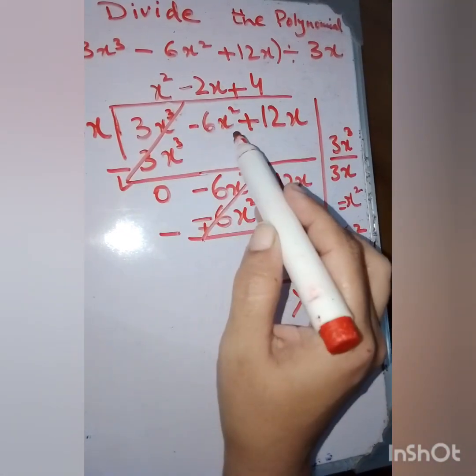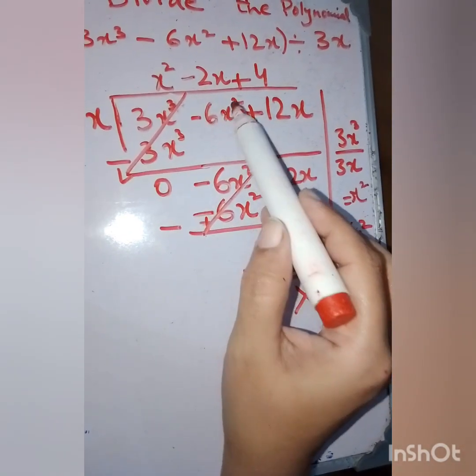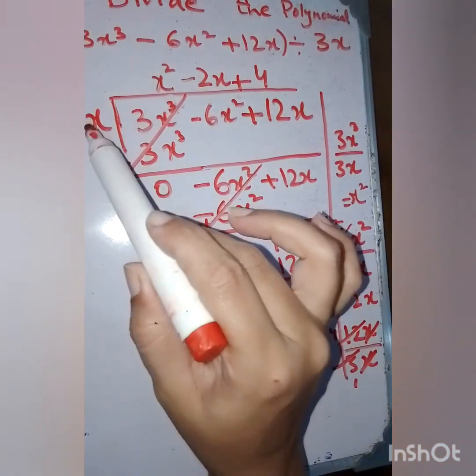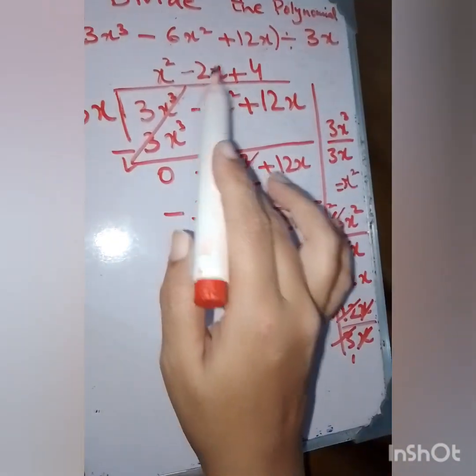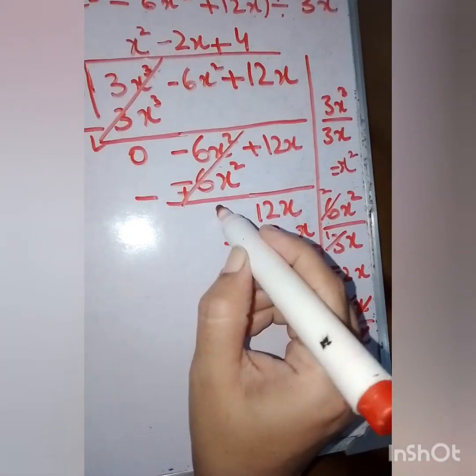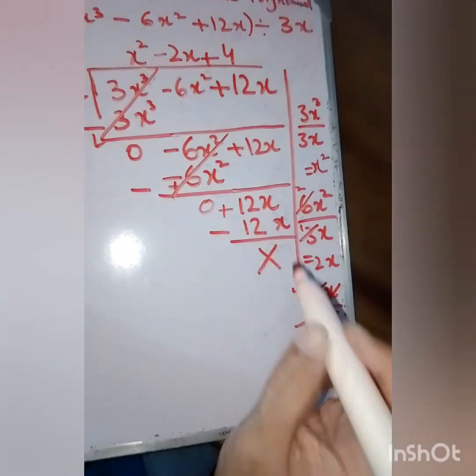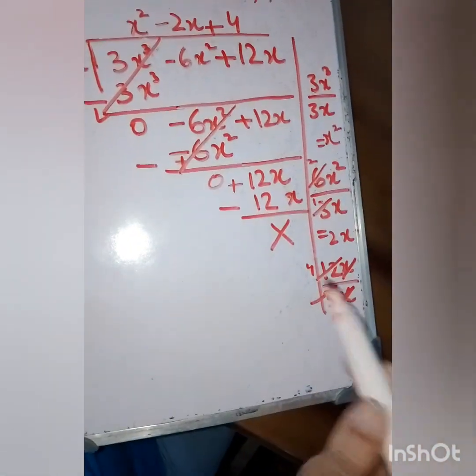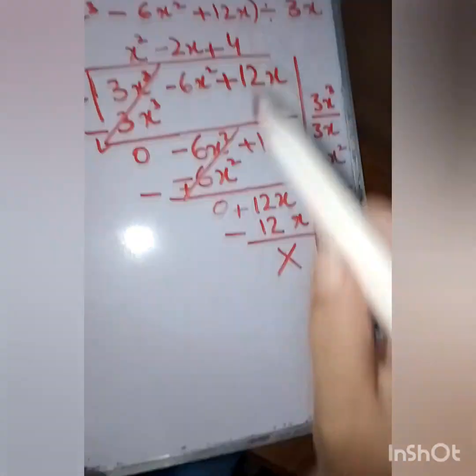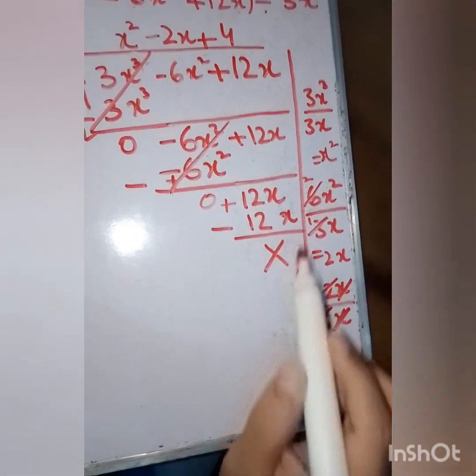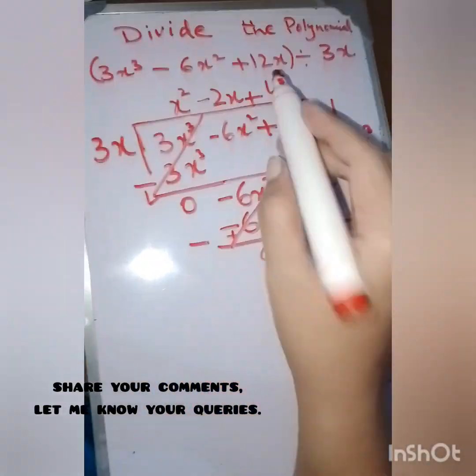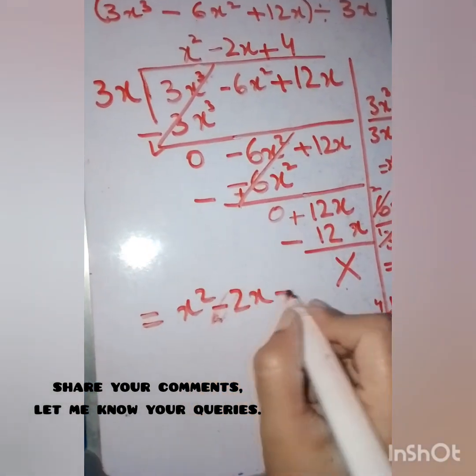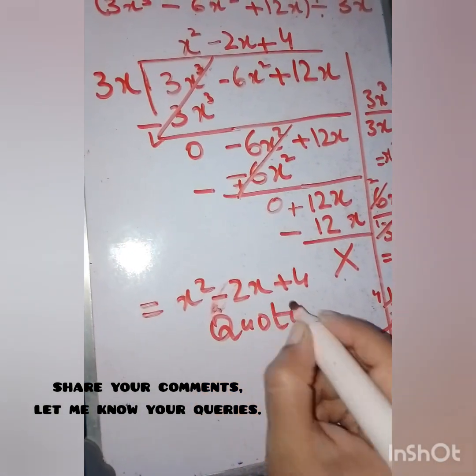After getting 0, we move to the second step. We drag down the remaining terms, divide the first term by the divisor, multiply, and solve. For the next term, dividing by the divisor gives 4. Repeating the same step gives 0 remainder. The final answer is x² - 2x + 4.